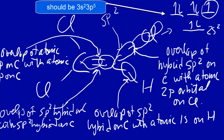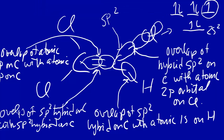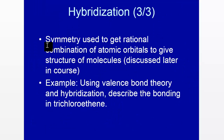That's how hybridization and valence bond theory are used to qualitatively describe the bonding in trichloroethene. We'll talk more about hybridization and the combination of atomic orbitals to form hybrid orbitals later in the course, where we'll need to consider symmetry to get a rational combination of atomic orbitals. So that's hybridization.